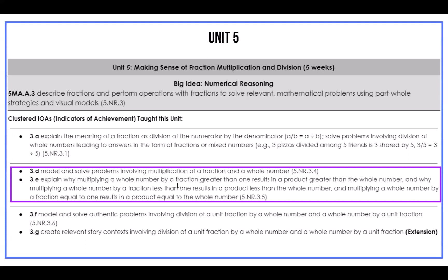With IOA 3D, students will build on previous work with multiplication and division of equal-sized groups using whole numbers, now applying multiplication to represent equal-sized groups of fractional amounts. They solve problems involving multiplication of a whole number by a fraction or mixed number using properties of operations. Students make sense of fraction multiplication using concrete and visual representations as well as strategies based in part-whole reasoning, and will also explain the meaning of a fraction as a multiple of unit fractions. IOA 3D is clustered with IOA 3E, as students reason about the relationship of fractions and products when whole numbers are multiplied by factors less than, greater than, and equal to one.